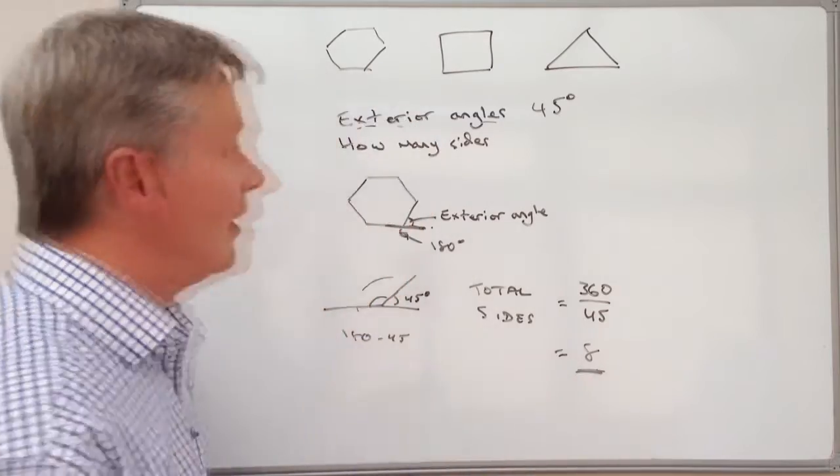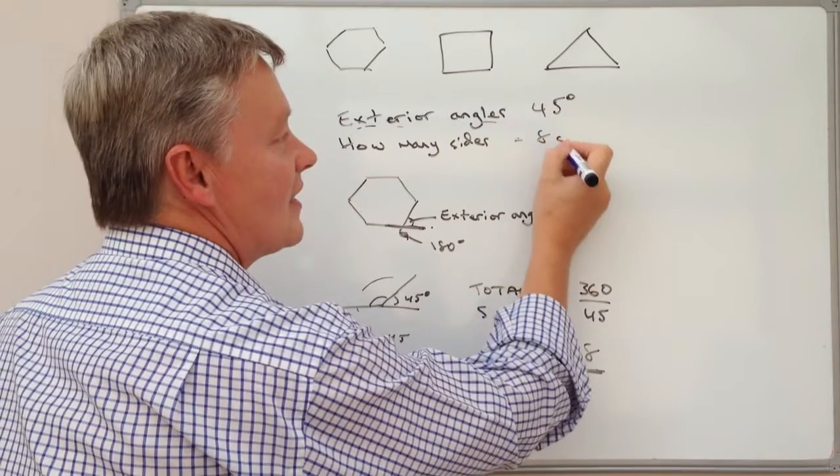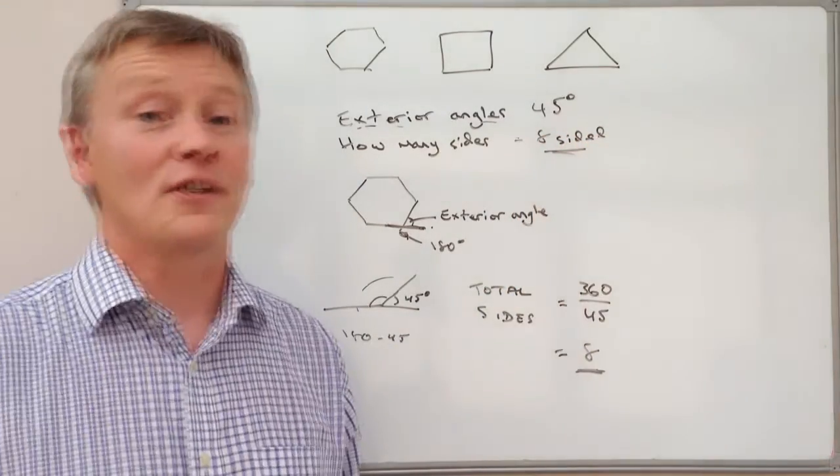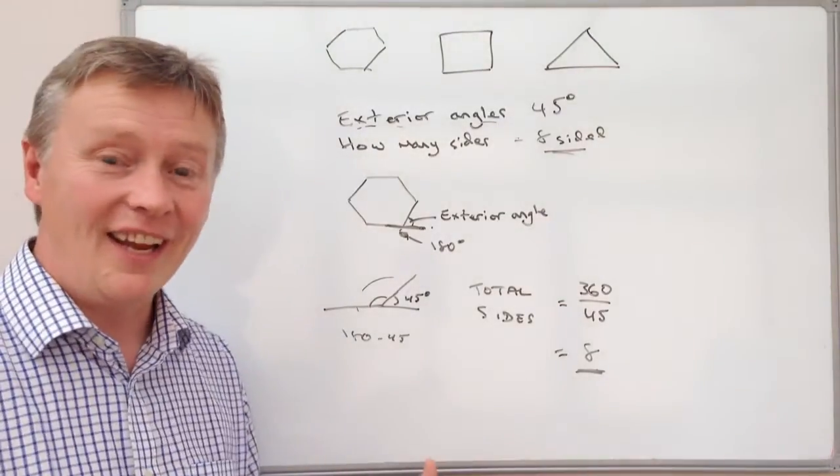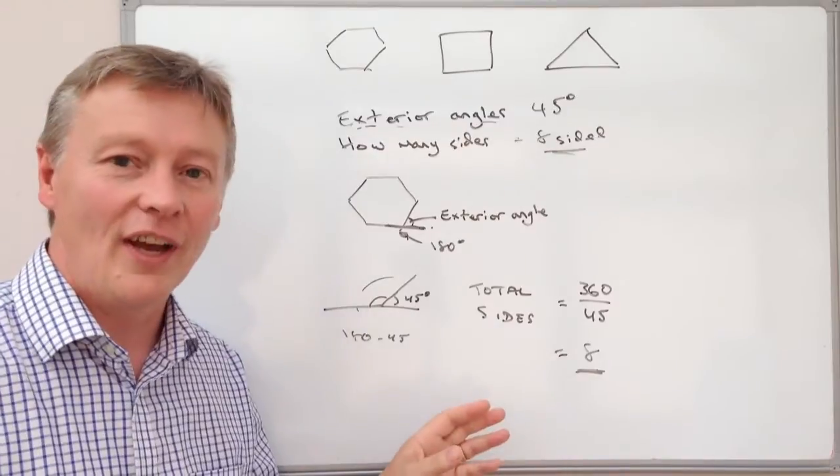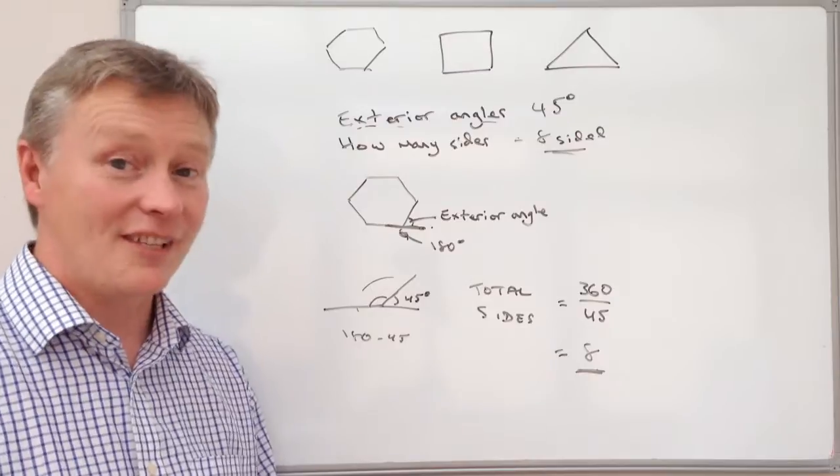So this particular regular polygon is 8-sided, and that's actually called an octagon. There is another video that just explores this a little bit further. Please do have a look on the next three minute video. I'll look forward to seeing you next time.